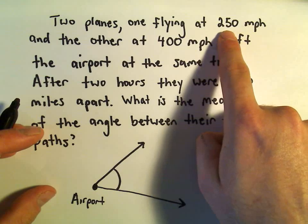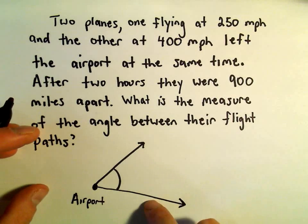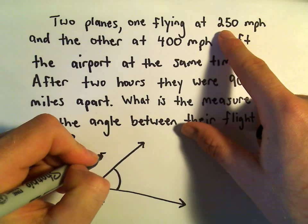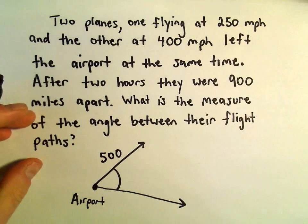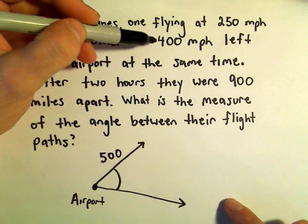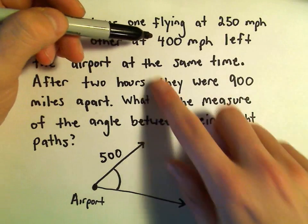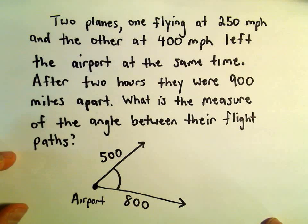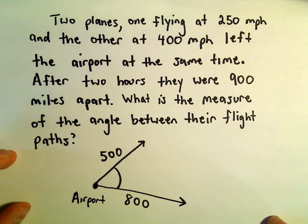If one plane's flying 250 miles an hour and they do that for two hours, well, that means one of the planes has gone 500 miles. The other plane that was going 400 miles an hour, after two hours, that's now traveled a distance of 800 miles.